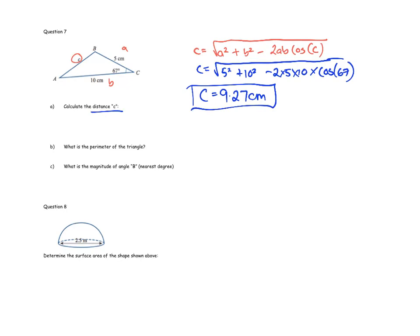It also says find the perimeter of the triangle — don't give away an easy mark like that. All you have to do is add them up. Even if you had no idea how to find the previous side, make up an answer and add them up because you know how to do that. The perimeter ended up being 24.27 centimeters.